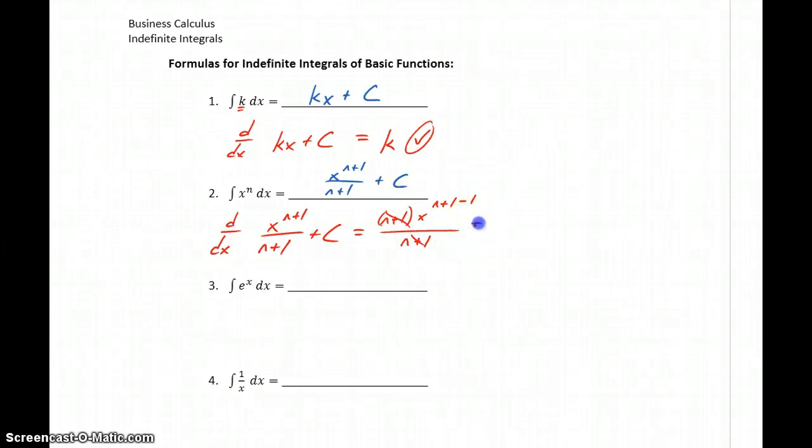So then n plus 1 over n plus 1 cancels. The derivative of c is 0. So we get x to the n plus 1 minus 1, or just x to the n power, which again is what we started off with.